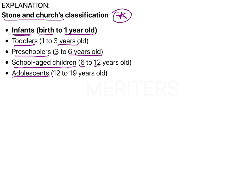The adolescent range is given as 12 to 19 years old, but 18 years is sometimes used in classifications as well. In Western countries especially, after a child turns 18 they are considered an adult, so from 18 years and above an individual will be known as an adult.